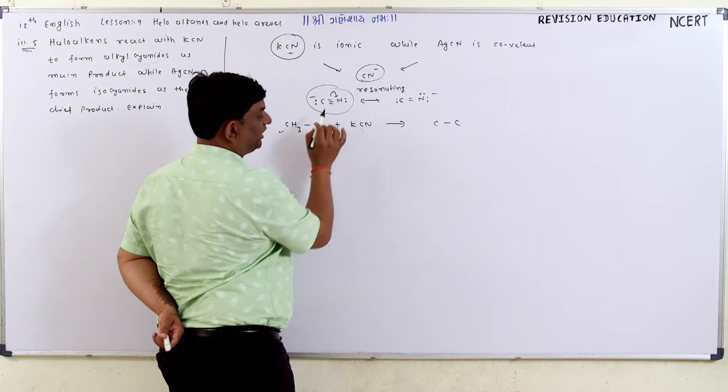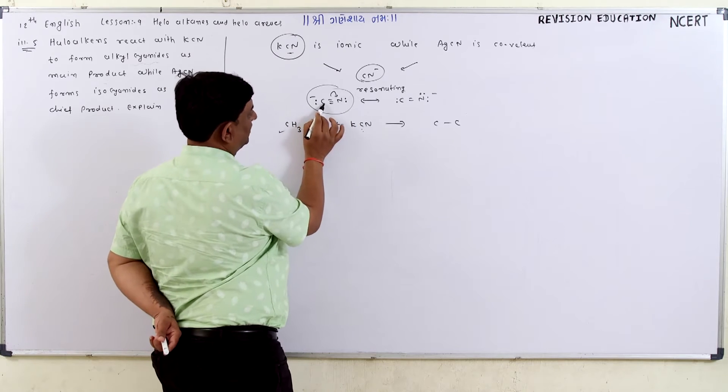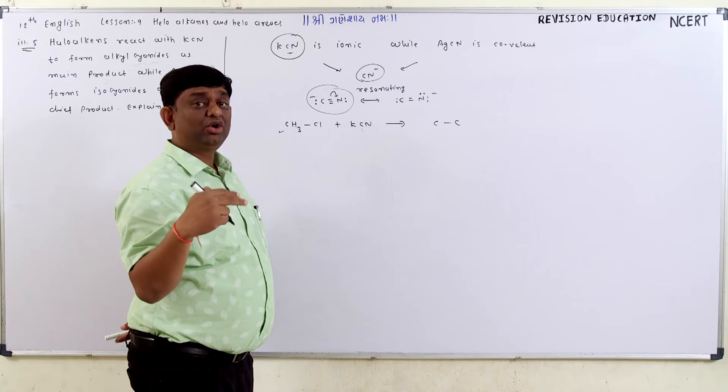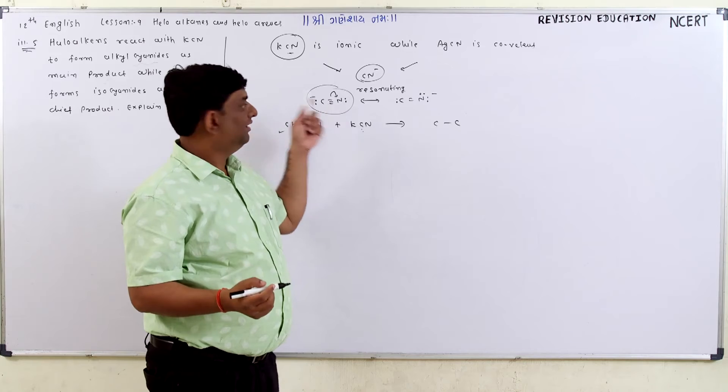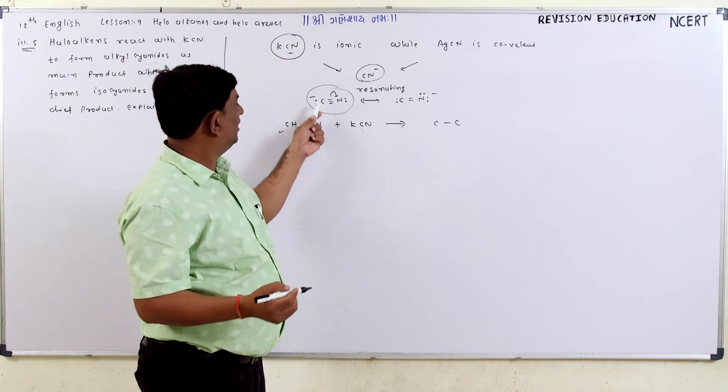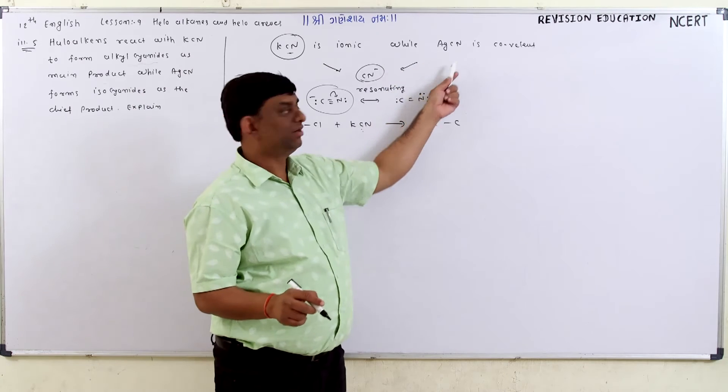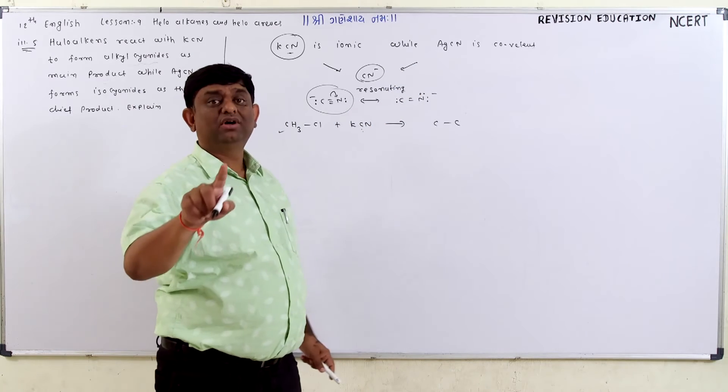Due to these resonating structures, we can say carbon and nitrogen both are electron donors. Both are available. But when KCN reacts, then electron donor is carbon. And with AgCN, then electron donor is nitrogen.